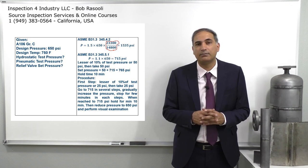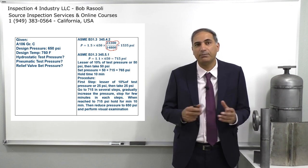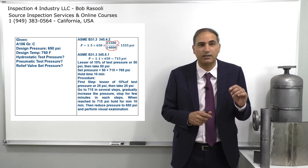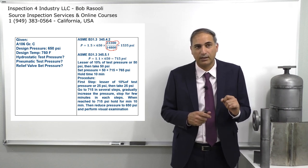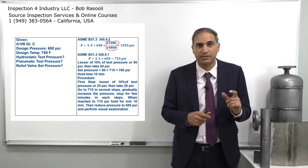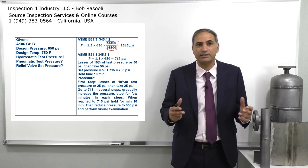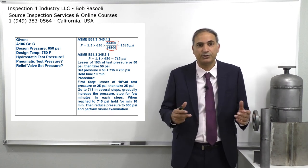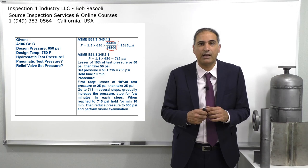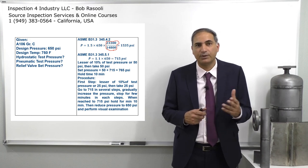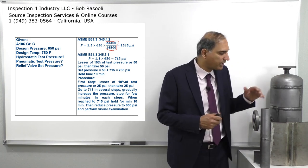I go to the A1 table to find the allowable stress at 750 degrees Fahrenheit for A106 Grade C, which is 14,800 psi. At room temperature, the allowable stress is 23,300 psi.